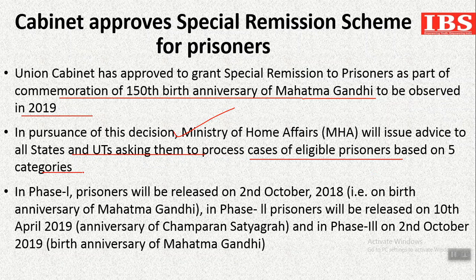The 5 categories are: 1st, women and transgender convicts greater than 55 years of age who have completed 50% of their actual sentence. 2nd, male convicts greater than 60 years of age who have completed 50% of their actual sentence. 3rd, physically handicapped or disabled convicts with 70% disability who have completed 50% of their sentence. 4th, terminally ill convicts. And 5th, convict prisoners who have completed two-thirds of their sentence.